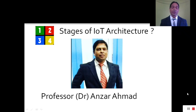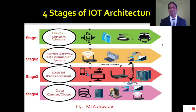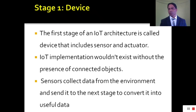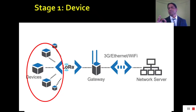In this short video, I am going to share details about each and every stage of IoT architecture. So let's find out first: the first stage of IoT architecture is called Device, which includes sensors and actuators.